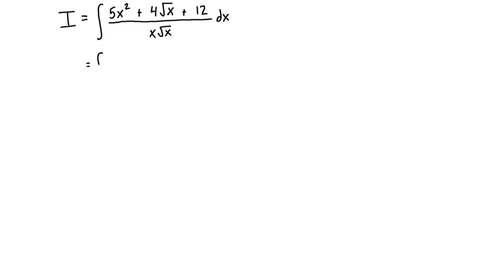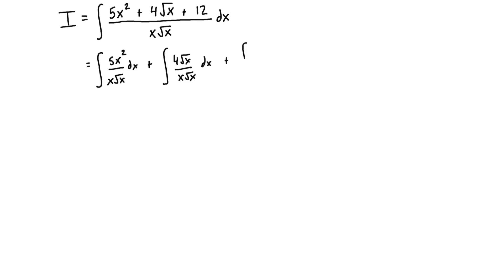The integral is going to be equal to the integral of 5x² over x√x dx — that's one integral — plus the integral of 4√x over x√x dx, plus the integral of 12 dx over x√x. Already this is starting to look more manageable.